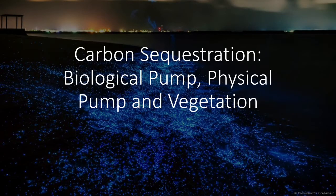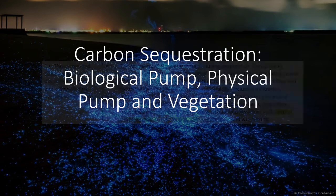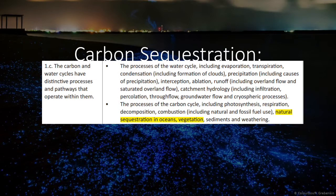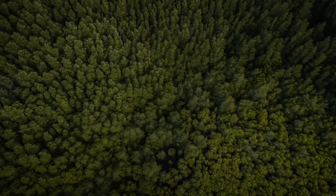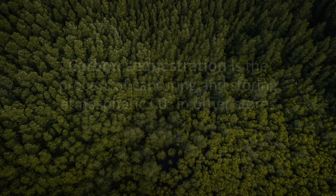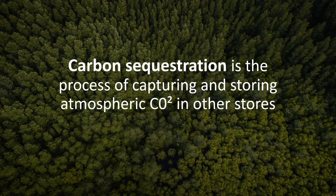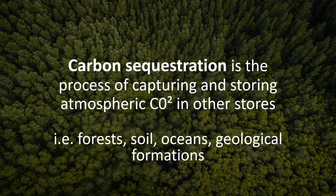In today's lesson we're going to cover carbon sequestration, looking at the biological pump, the physical pump, and the way vegetation does this. This is part of the A-level OCR specification for geography, section 1C. Carbon sequestration is defined as where atmospheric CO2 is captured and stored in other stores — taken out of the atmosphere and put into stores such as forests, soils, oceans, or the geology of Earth.